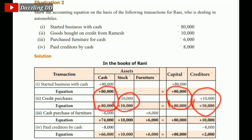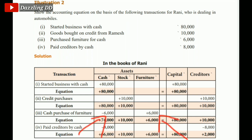The third transaction is Purchased Furniture for Cash. In the previous one we had credit; now we use cash to get furniture. So Cash is minus 6,000 and Furniture is plus 6,000.